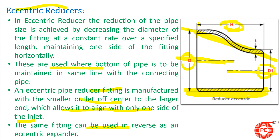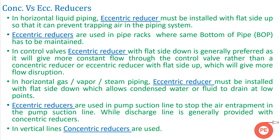Eccentric reducers are used in pump suction lines because of air entrapment issues. If we use concentric reducers on pump suction, there can be chances of air entrapment, which can lead to the problem of cavitation in pumps.